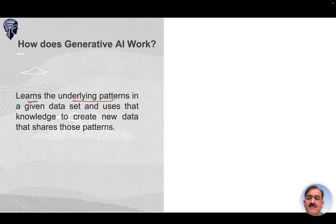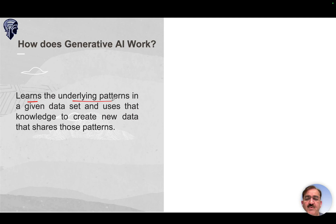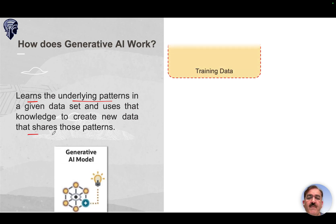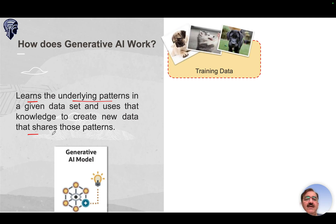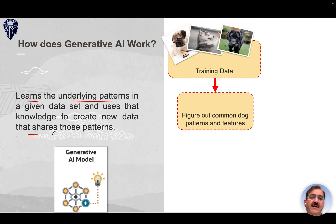How does Generative AI work? The learning process is complex — the model learns the underlying patterns in a given dataset and then uses that knowledge to create new data that shares those patterns. For example, let's say we have a large collection of dog images of various breeds, and that is our training data.